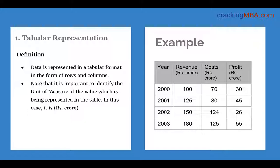The data represented is the profit of an infrastructure company for four years from 2000 to 2003. For example, for the year 2000, the revenue is 100 crores, the cost is 70 crores, and the profit is 30 crores. Similarly, we can interpret the profit of this company for the other years of 2001, 2002, and 2003.